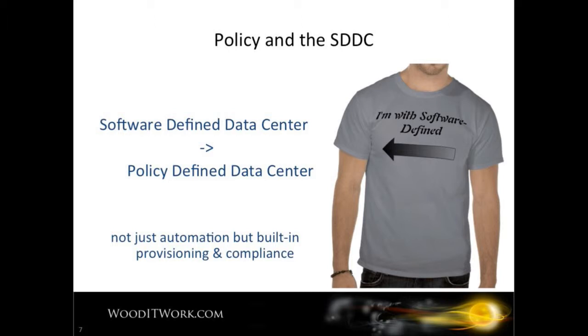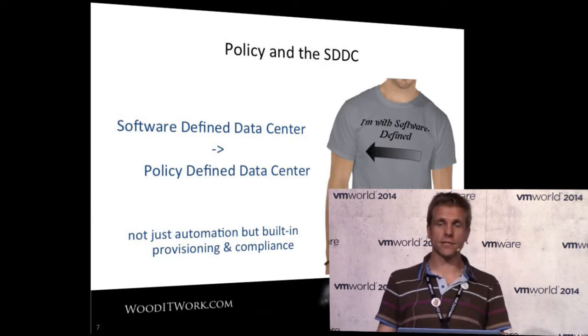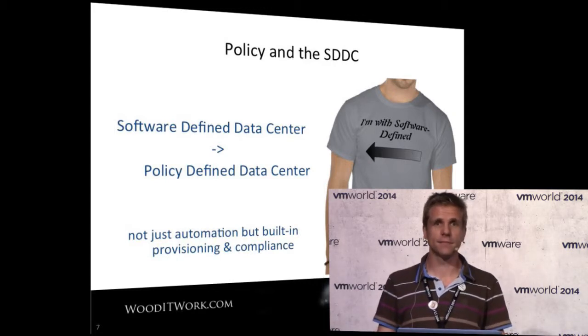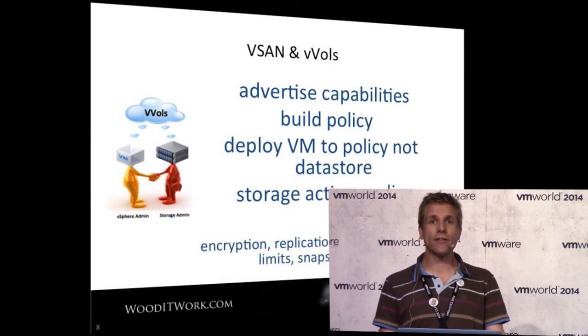Rather than running a script across a thousand VMs to put them on particular storage or to check something, with policy you wouldn't deploy a VM to a datastore - you deploy a VM against a policy, and the policy ensures all those settings are done. For security, there are things you can do to a VMX file to make a VM more secure, but instead of running a script against a thousand different VMs to make that settings change, with policy you set it once. Those VMs are automatically aligned to that policy - if you change the policy, a thousand VMs change. You just check the policy rather than writing a script to read a thousand VMs.